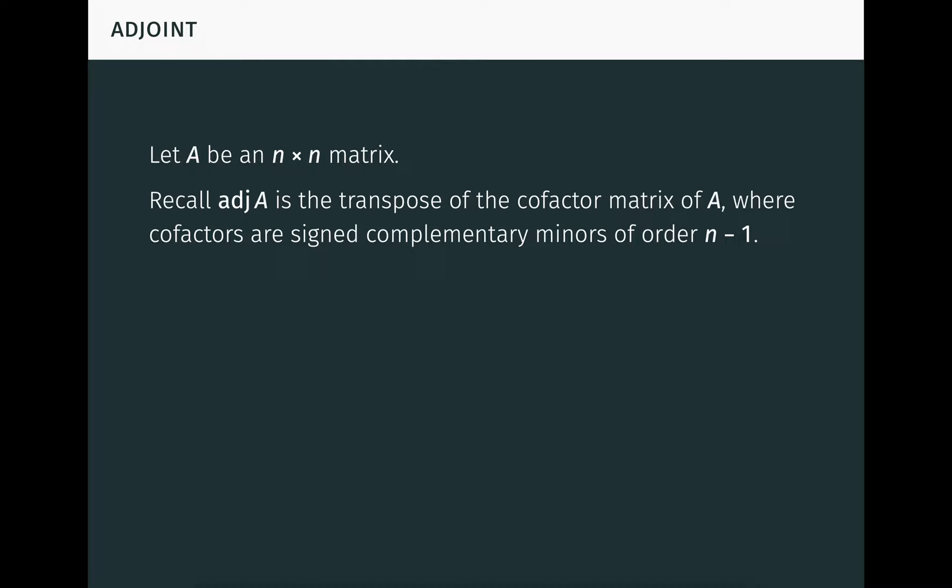To start, again let A be an n by n matrix. Recall that the classical adjoint of A, denoted by adj A, is the transpose of the cofactor matrix of A, where cofactors are signed complementary minors of order n minus 1 in A. We have a fundamental theorem relating the adjoint and the determinant, which is essentially equivalent to Laplace's cofactor expansion formula for the determinant along a single row or column, as well as to Kramer's rule.